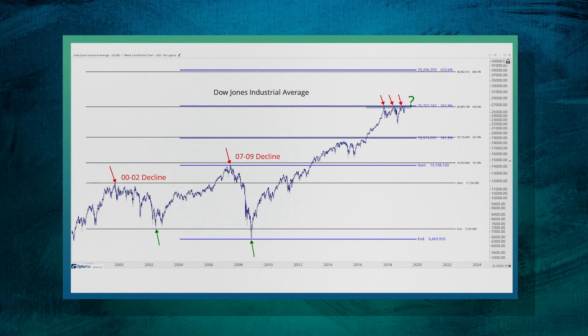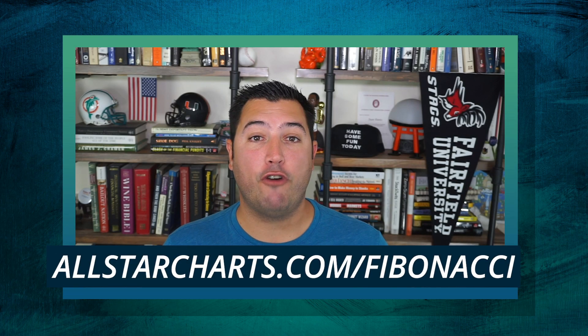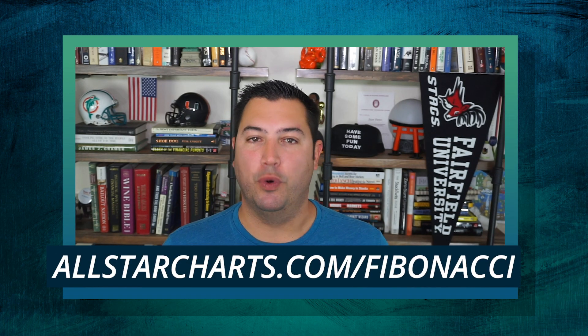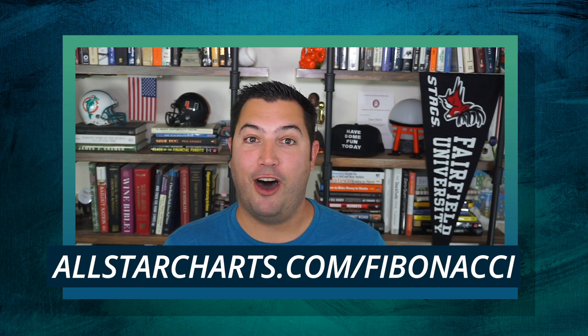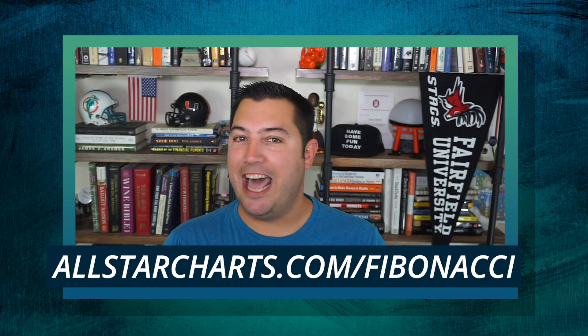Moving forward, what do we want to do? We're looking at this 27,000 level. If the Dow Jones Industrial Average manages to break out above that and hold it, I think there's a tremendous amount of upside in stocks. We want to be buying the Dow Jones Industrial Average, we want to be overweight equities, and I think there's a lot of upside to go. If you have any further questions on Fibonacci, I encourage you to go to allstarcharts.com/fibonacci — I lay it all out there.